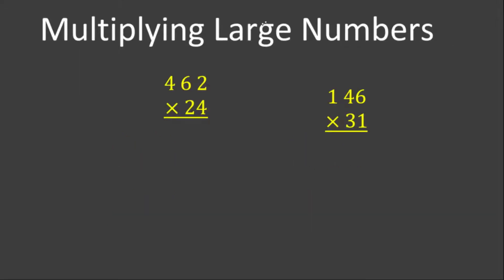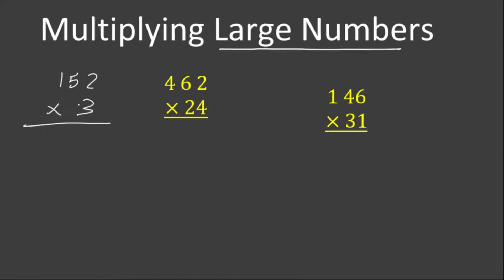In this video we are going to focus on multiplying large numbers. In the previous video we discussed multiplying a two-digit or three-digit number by a one-digit number. For example, if you have a three-digit number like 152 multiplied by 3, the digit at the bottom is multiplied by all digits at the top. We first multiply 3 by 2 in the ones place, then multiply 3 by 5 in the tens place.